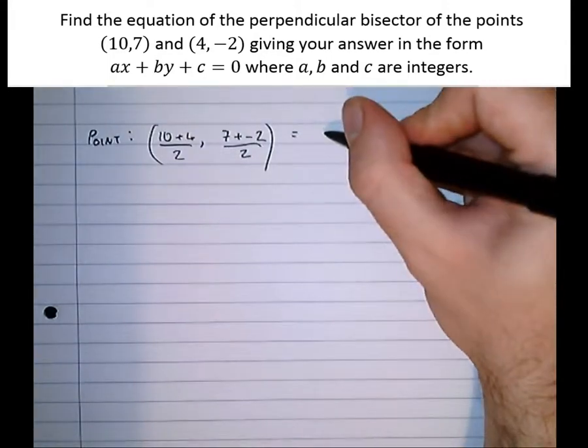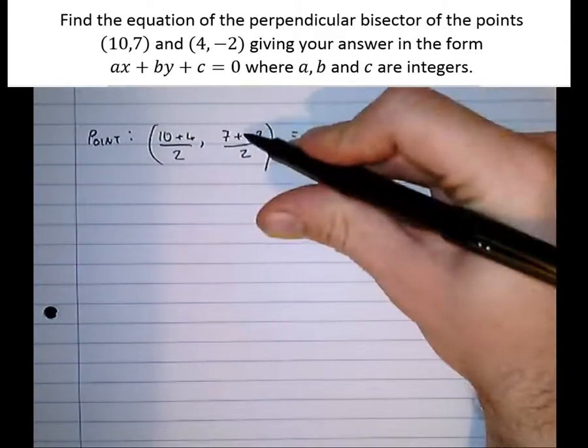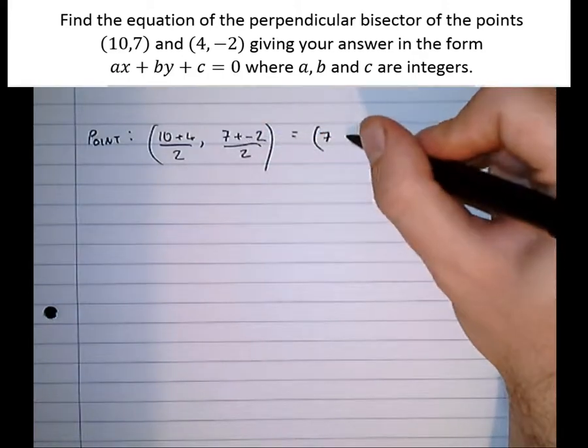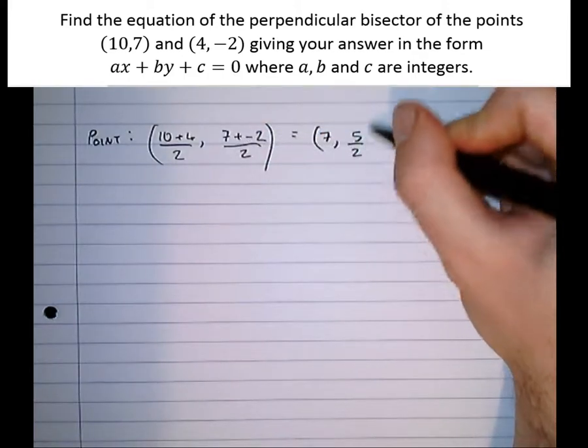Equals, well, 10 plus 4 is 14, over 2 is 7. And this one, 7 minus 2 is 5 over 2. And we're going to leave it like that.